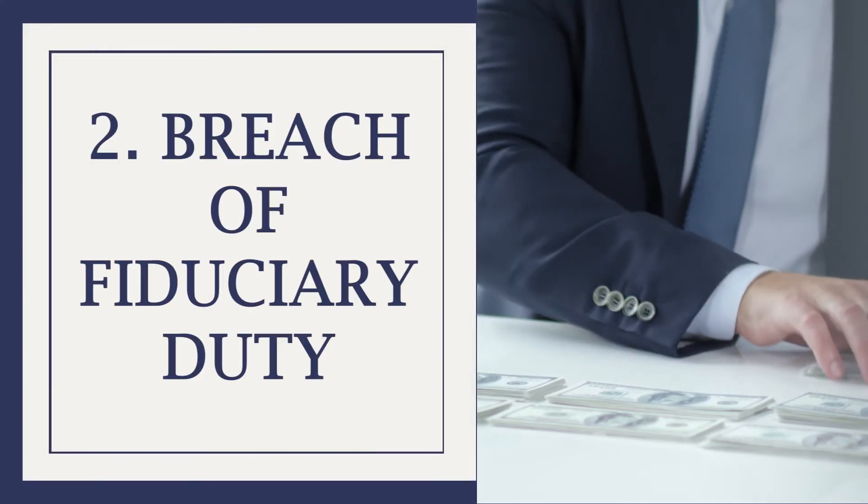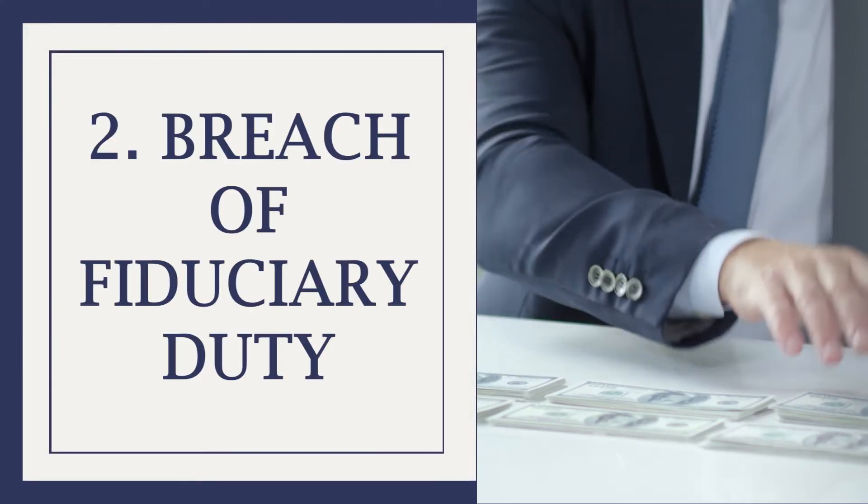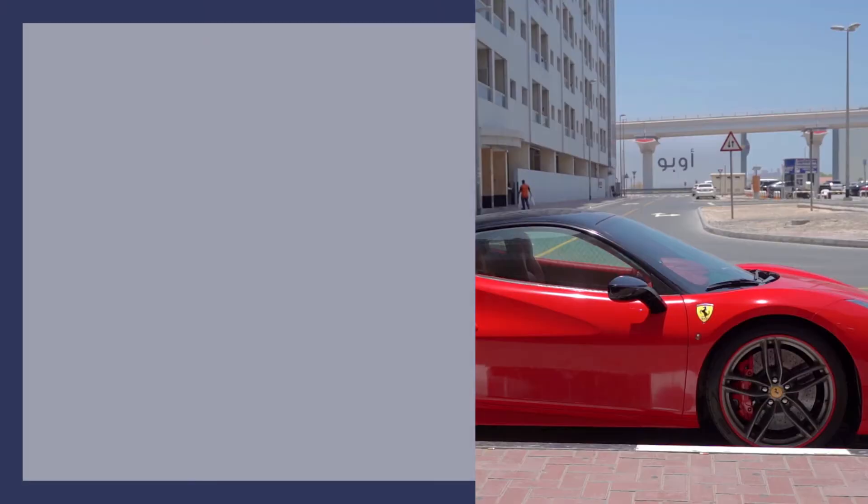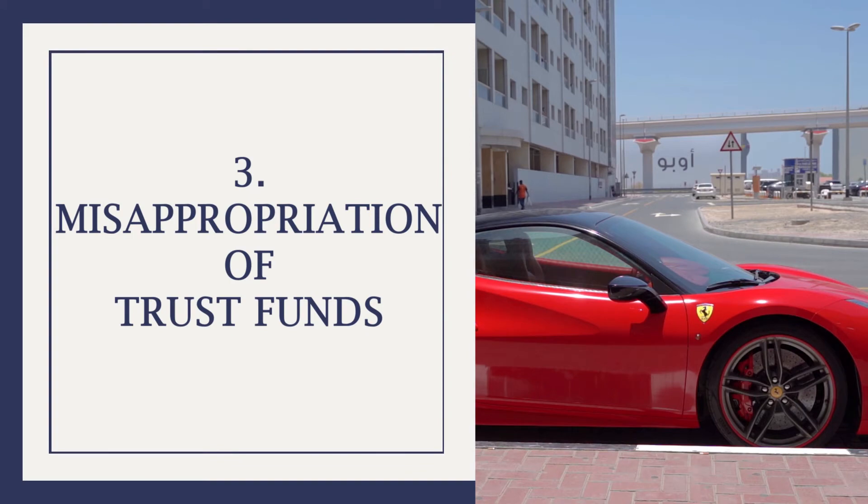Second, breach of a fiduciary duty. A trustee has numerous duties in their role. Under the California Probate Code, a violation of these duties is called a breach of fiduciary duty. For example, a trustee who favors one beneficiary — or themselves, if they're also a beneficiary — over another has violated the duty to deal impartially with beneficiaries.